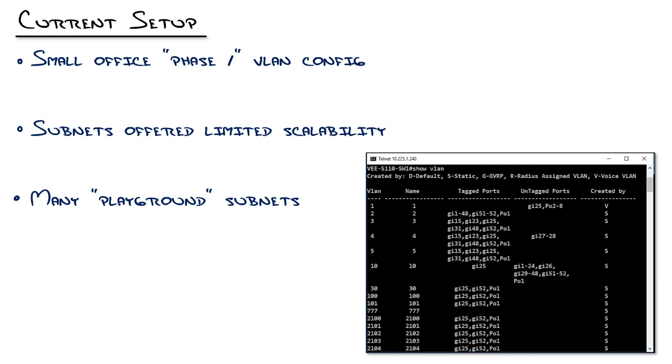And after years of trying it my own way, I finally decided that guy was right. A little planning can save you a lot of time. Now this project is going to be especially fun because we're moving from what I would call a small office phase one VLAN config, as in we rolled out VLANs at our office because just about everybody has VLANs.